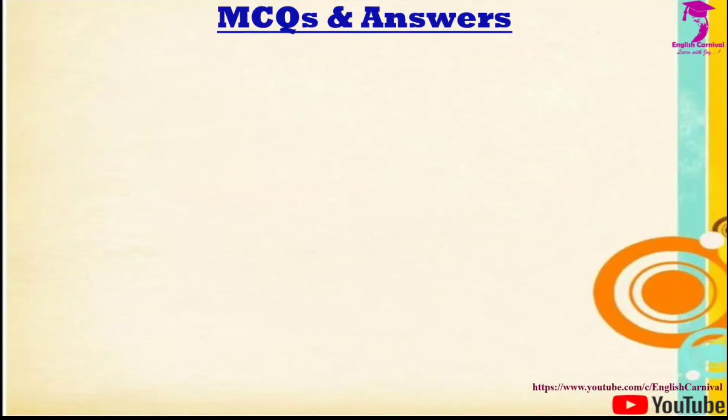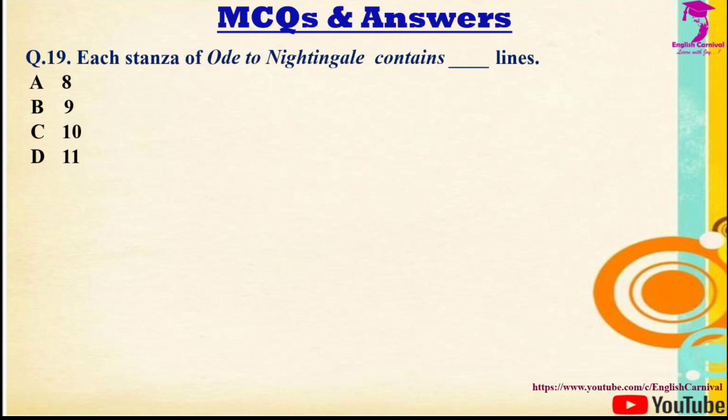Question 19: Each stanza of Ode to a Nightingale contains — lines. Options: A) 8, B) 9, C) 10, D) 11. The correct answer is C — 10 lines.